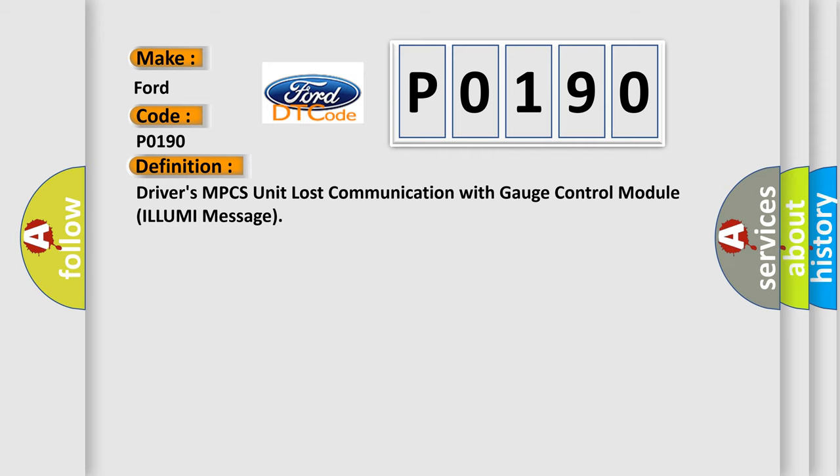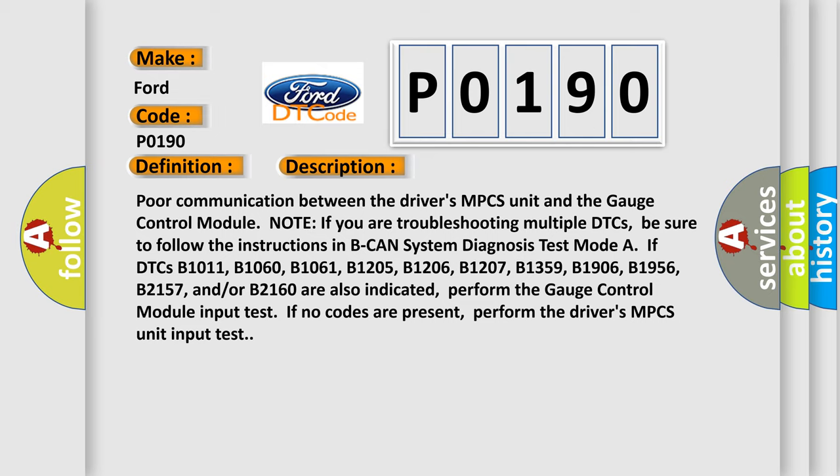Here is a short description of this DTC code: poor communication between the Drivers MPCS unit and the gauge control module. Note — if you are troubleshooting multiple DTCs, be sure to follow the instructions in B-CAN system diagnosis test mode. If DTCs B1011, B1060, B1061, B1205, B1206, B1207, B1359, B1906, B1956, B2157, and/or B2160 are also indicated, perform the gauge control module input test. If no codes are present, perform the Drivers MPCS unit input test.